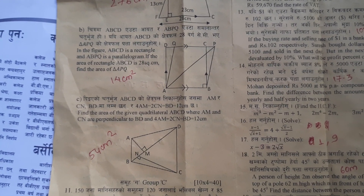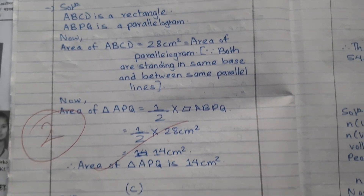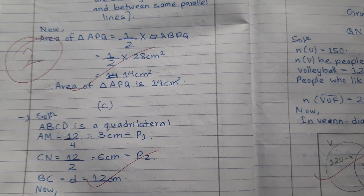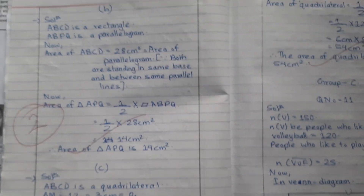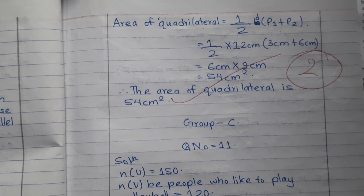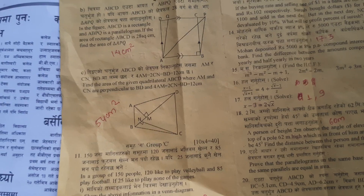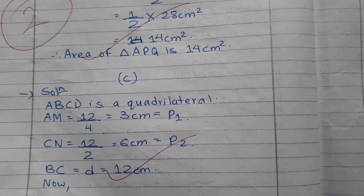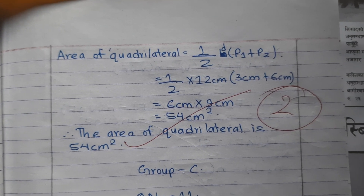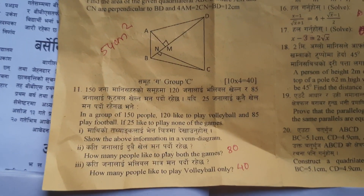Ten B answer is. Ten C answer is. Remaining part of 10B. Once again 10C. Yes, this is the remaining part of 10C. Now entering into Group C, question number 11 is...